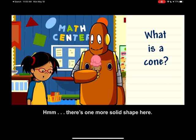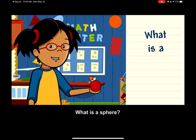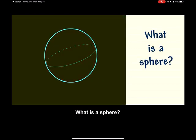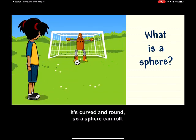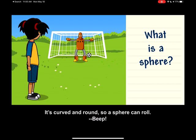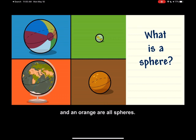There's one more solid shape here. What is a sphere? A sphere has no faces, no edges, and no vertices. It's curved and round. So a sphere can roll. A ball, marble, globe, and an orange are all spheres.